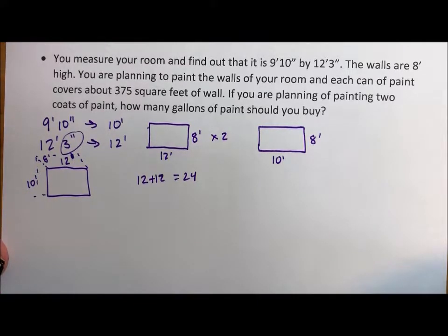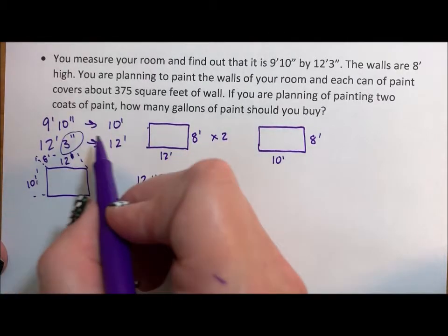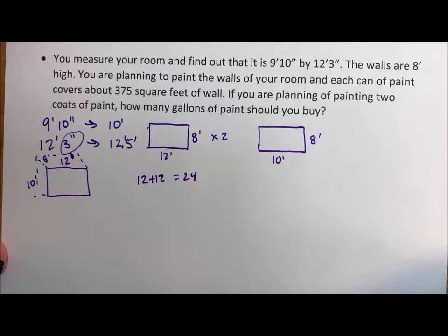I'd rather buy too much paint than not enough paint. So this is how we estimate. How do we make this simple? If I made this 12 and a half feet instead of 12?